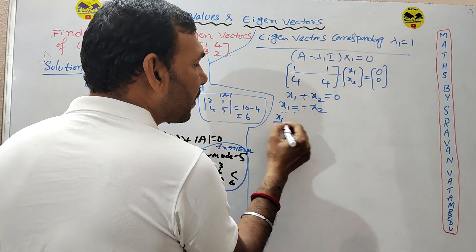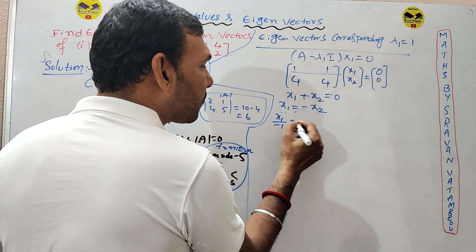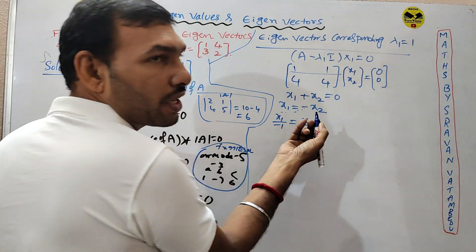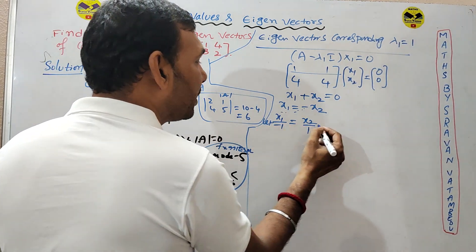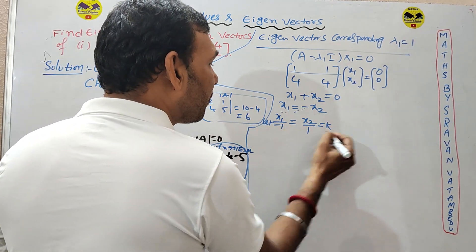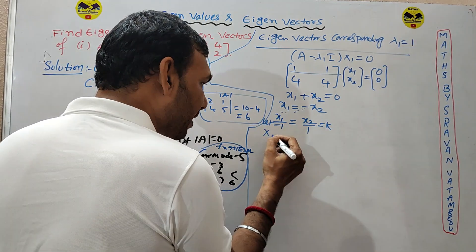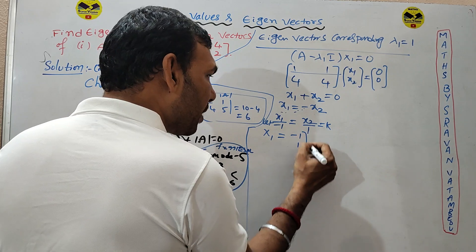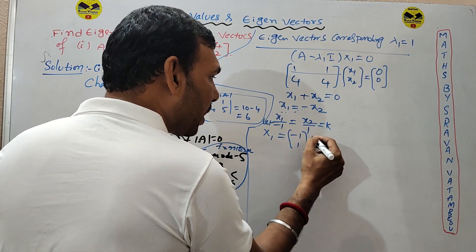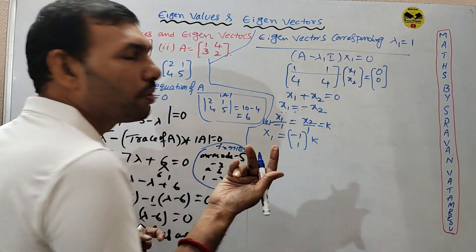From the equation: x1 by minus 1 equals x2 by 1, so the first eigenvector is [−1, 1]·k. Simple.